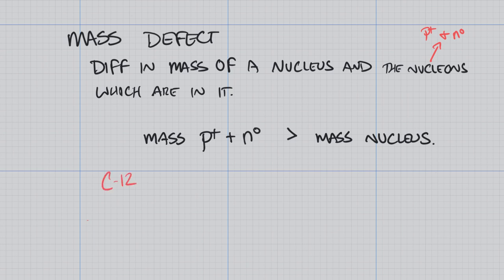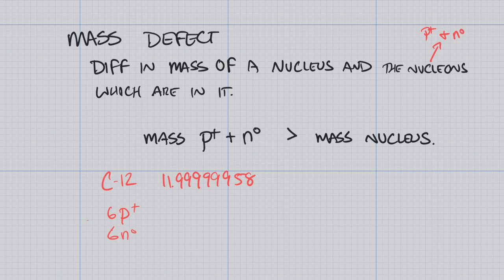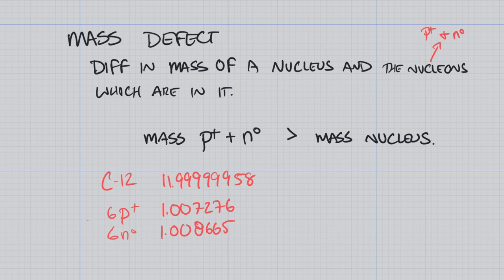If we take a look at carbon-12, it has a mass of 11.9999958 U. However, if we look at its six protons and six neutrons — the mass of a proton is 1.007276 and the mass of a neutron is 1.008665 — combining those six times each gives a value greater than 12. So there is a difference between the mass of carbon-12 at 11.99 and the sum of its individual parts, which is greater than 12. That difference is the mass defect.